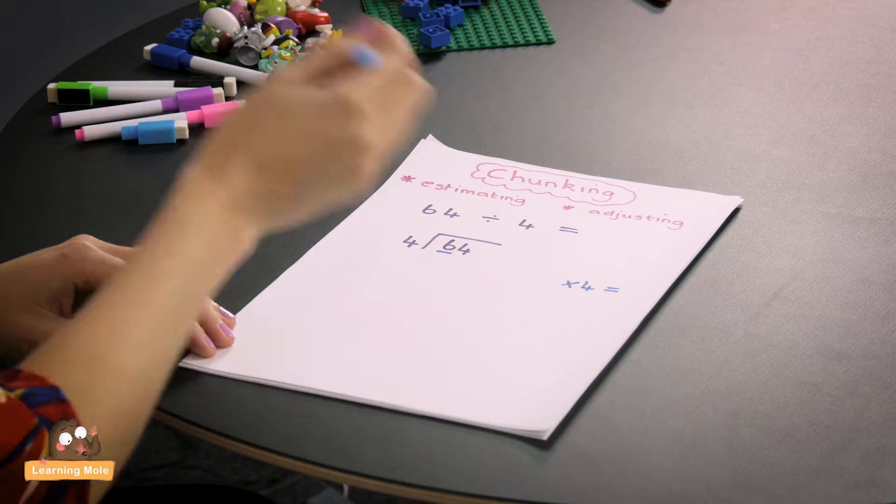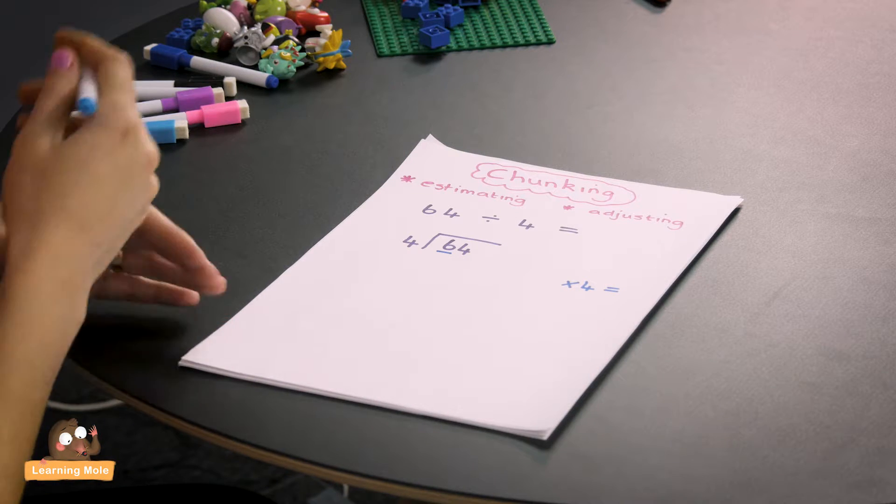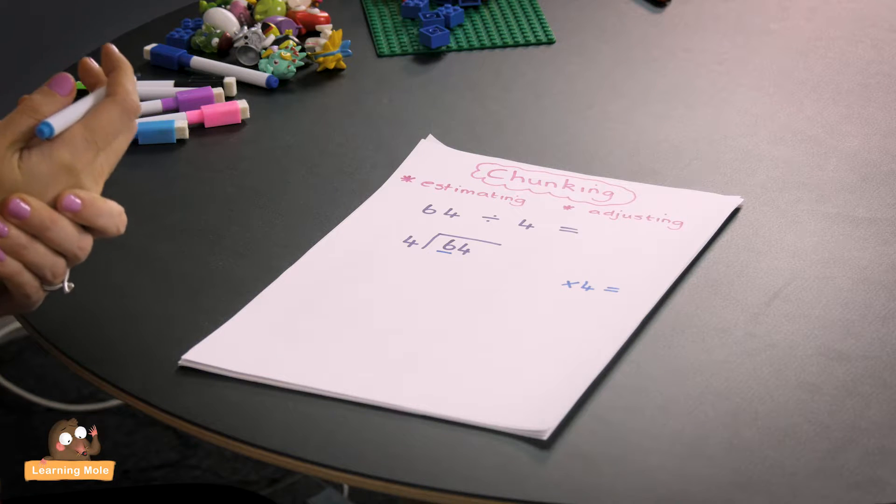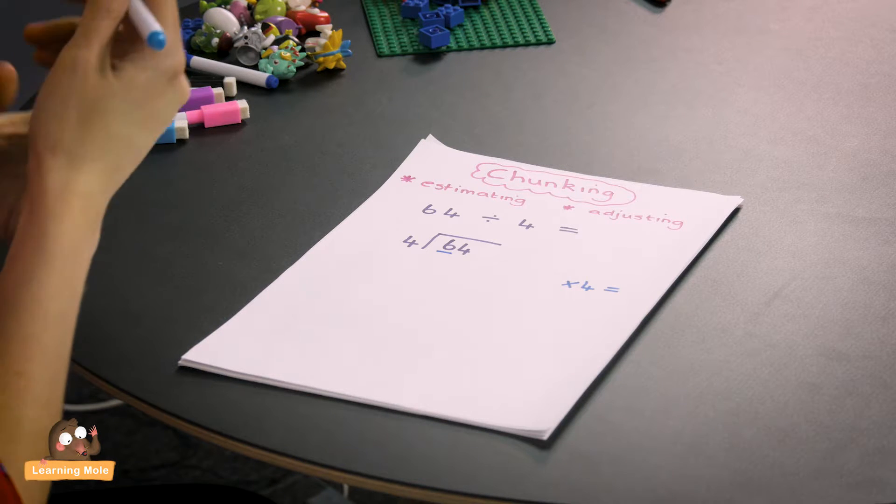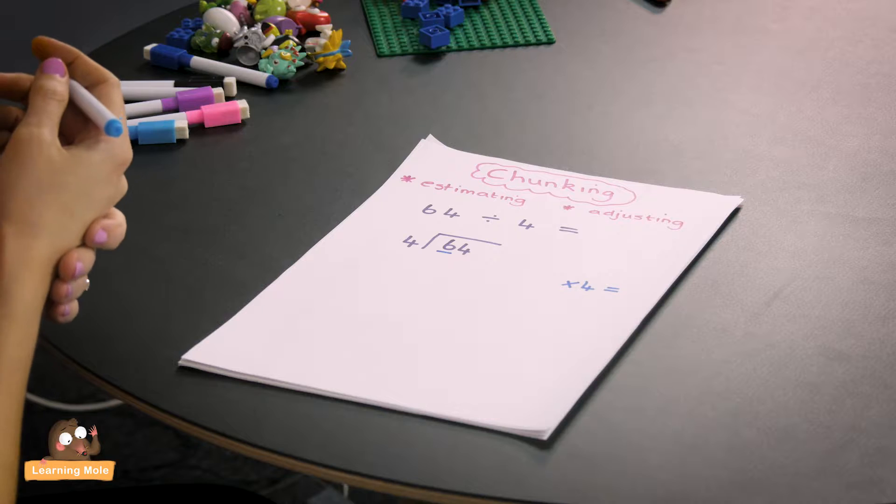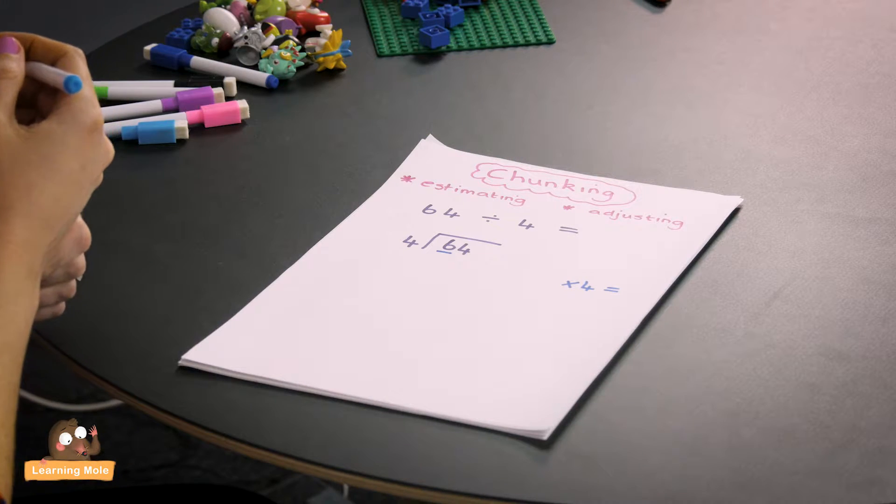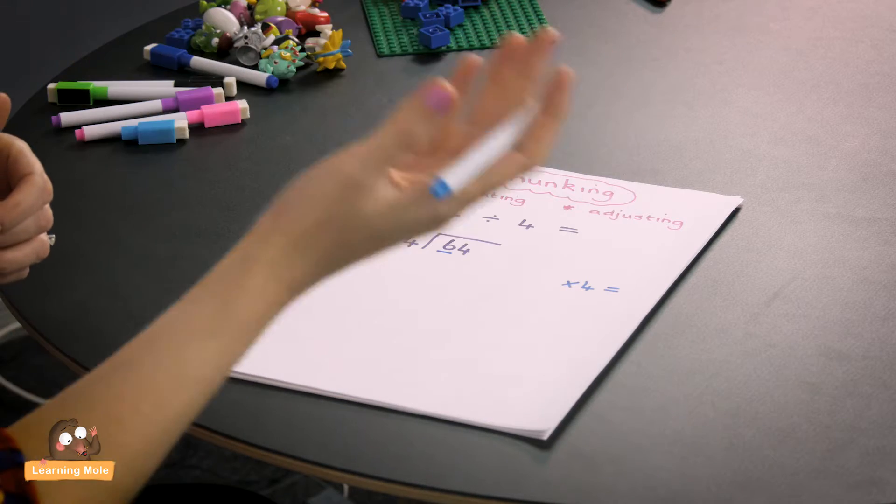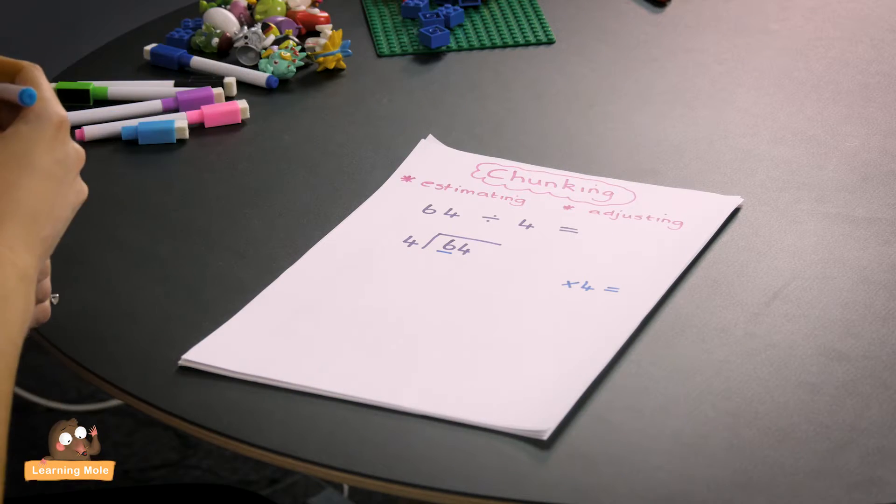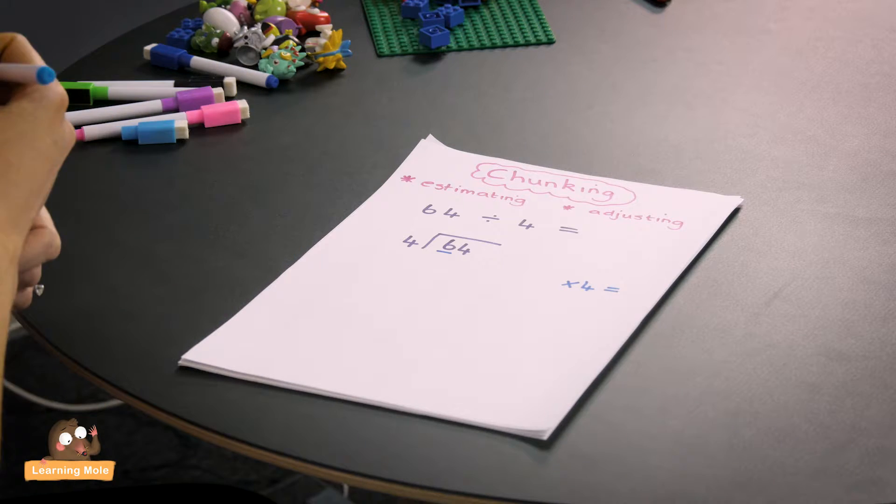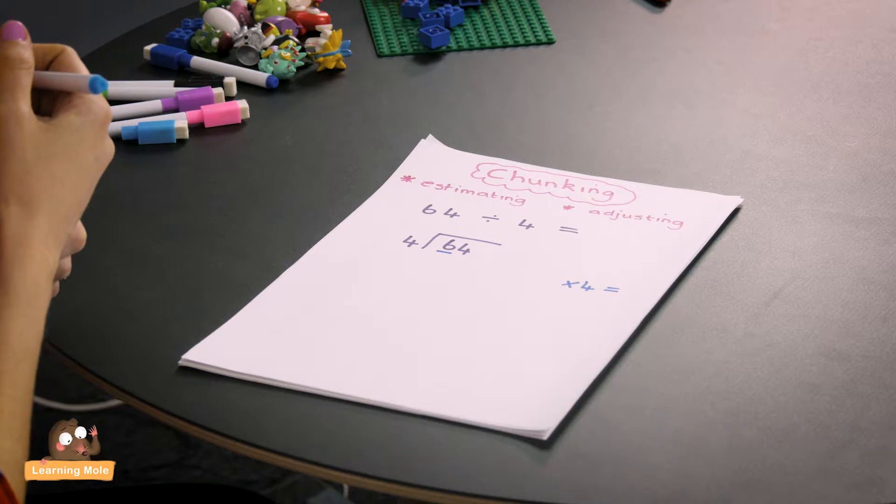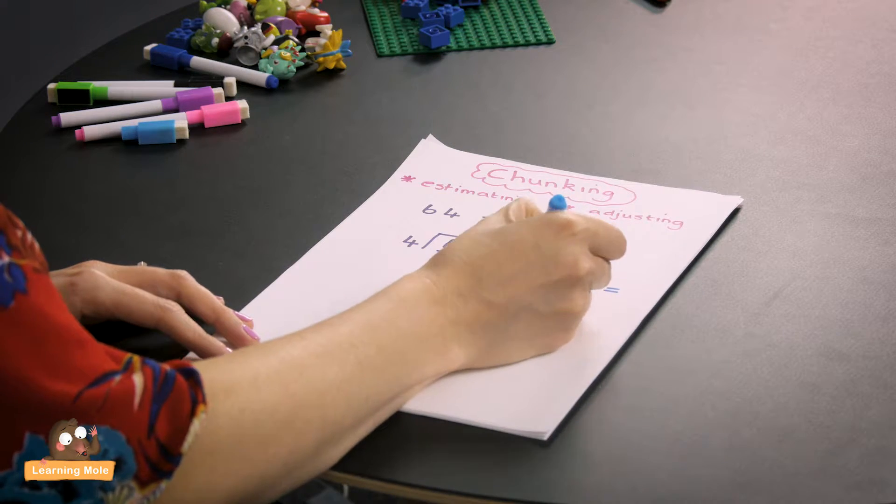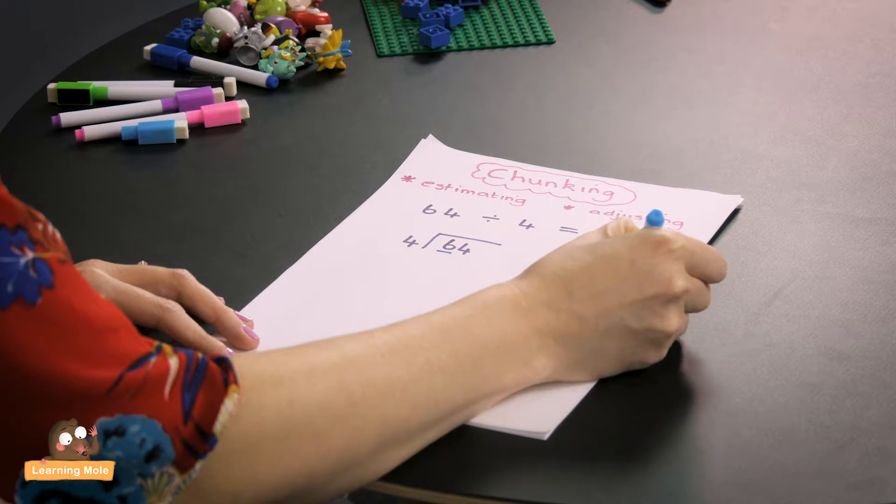How many times can 4 go into 60? Here you'll be thinking about your estimating. What do you know in your times tables? What number is close to 60 in your 4 times tables? Your child will hopefully think about 10, 11, 12—10 times 4, 11 times 4, 12 times 4. I would try to stick to those rounded numbers and encourage children to use the multiples of 10. So 10 times 4 equals 40.